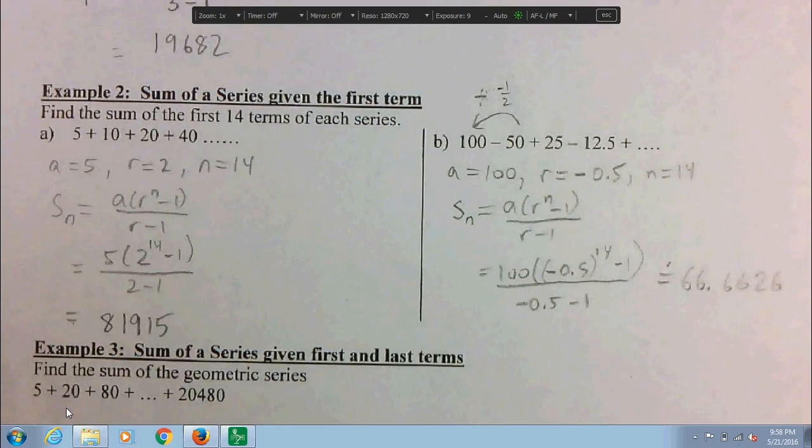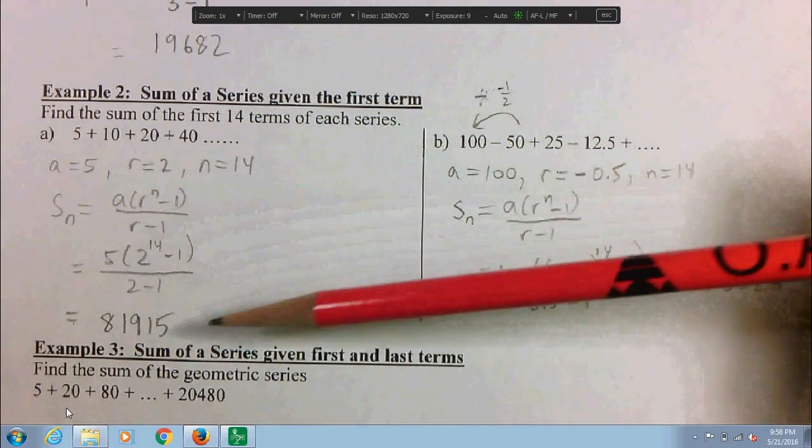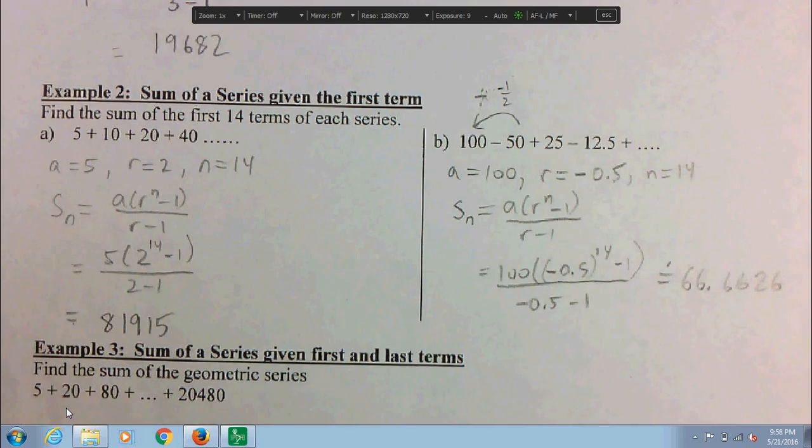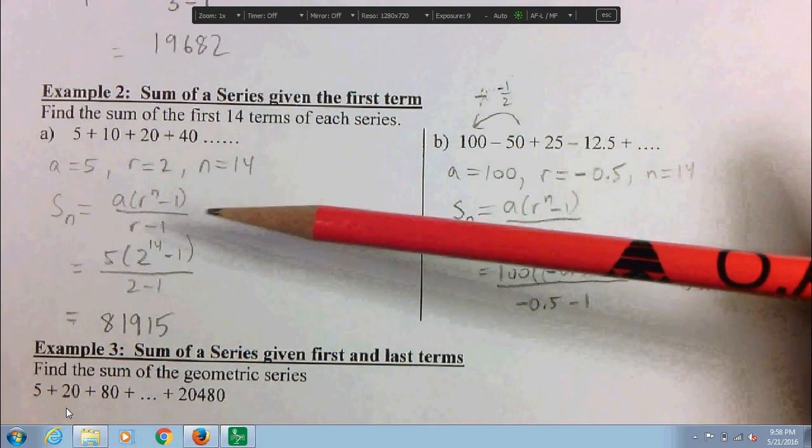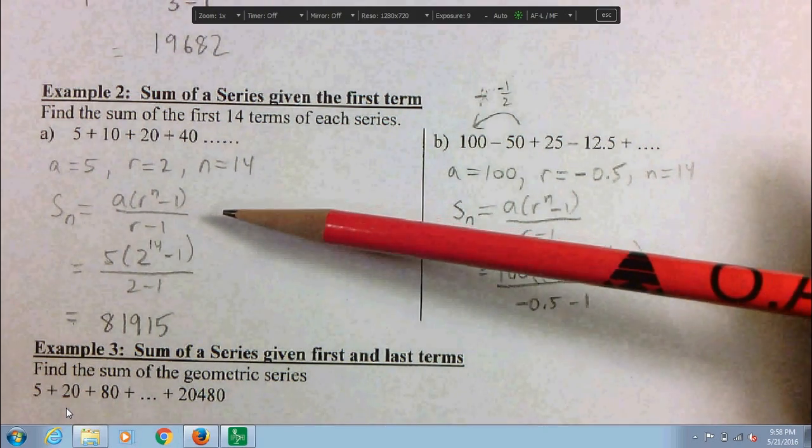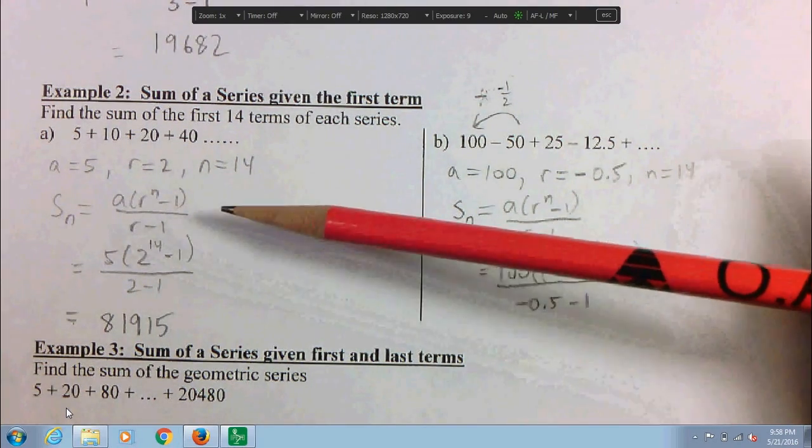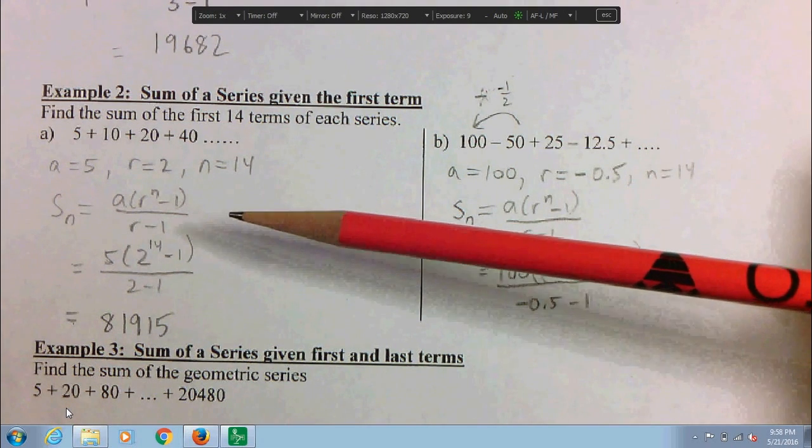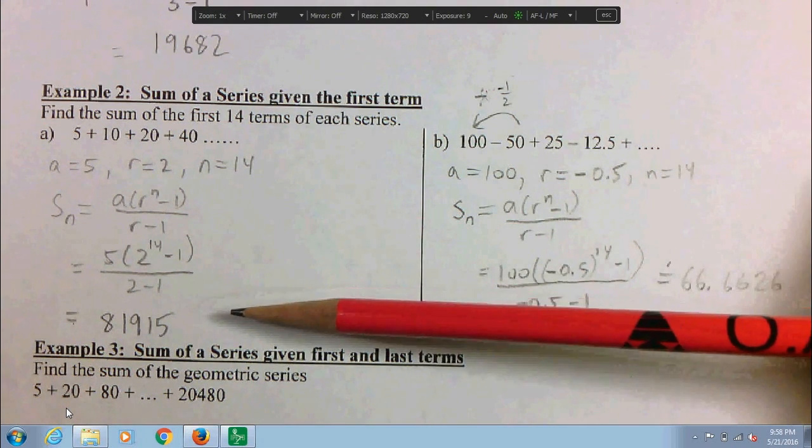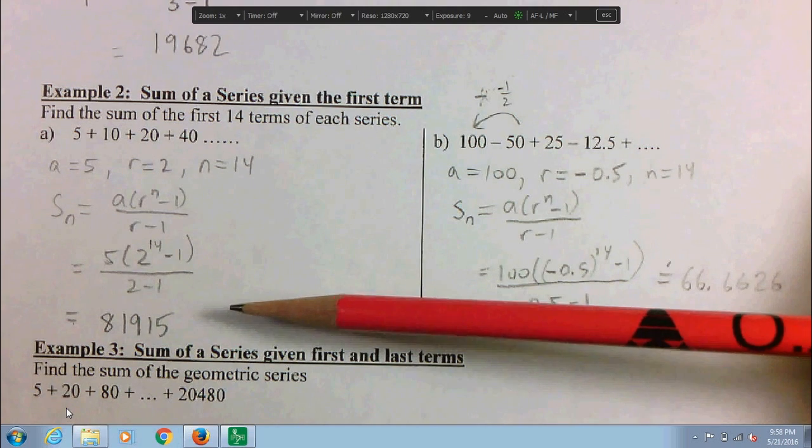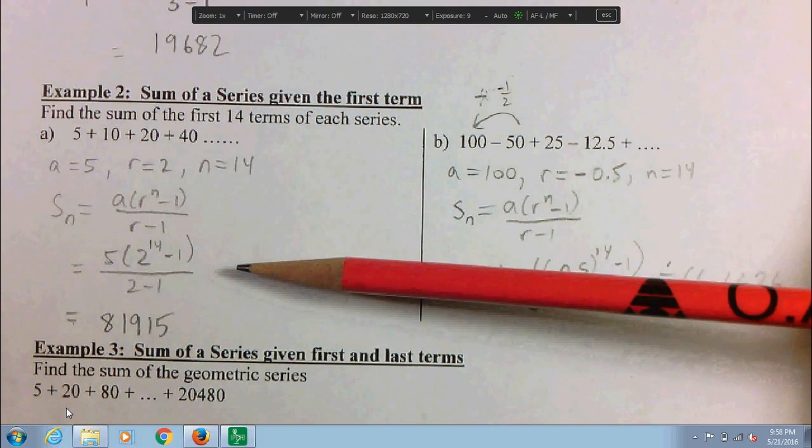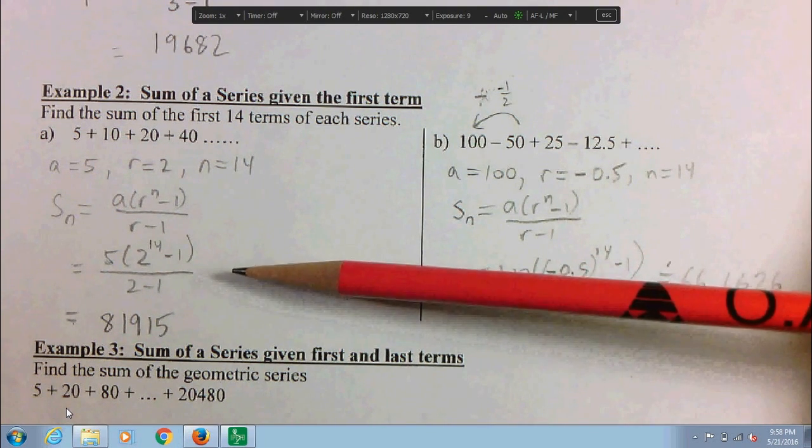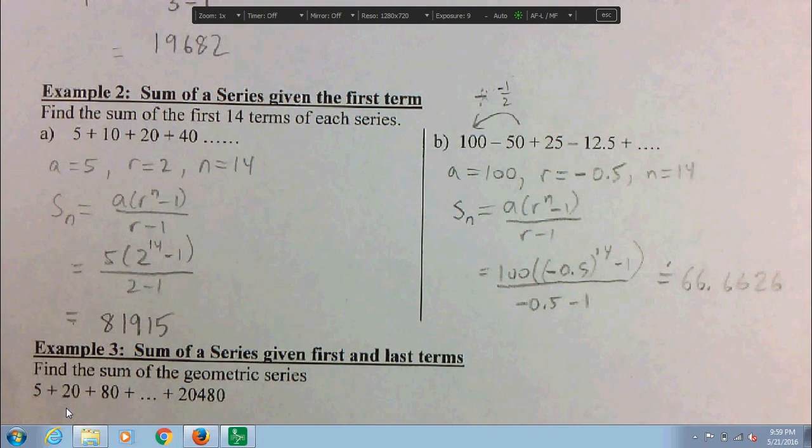Hopefully you got the same answers that I got. So first one I got 81,915. Want to point out that we always write the formula first. Once again, to remind you, there will be communication marks lost if you don't write the formula first. The reason we do that is to make sure that if you don't get the right answer, I am understanding whether you just didn't know the formula or whether you knew the formula but you put the wrong values into it or you put the right values into it but then it was a calculation error. So it's always good form to write the formula first.